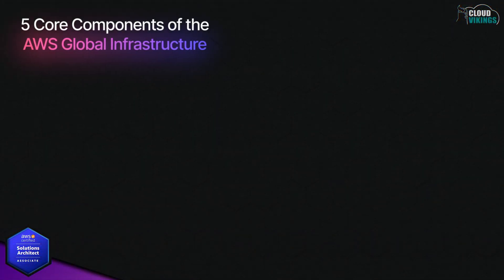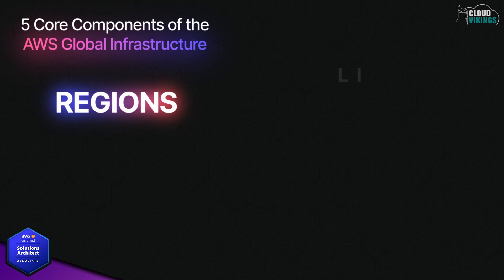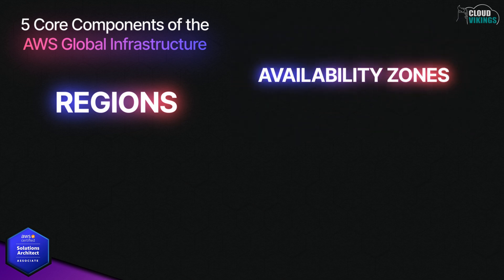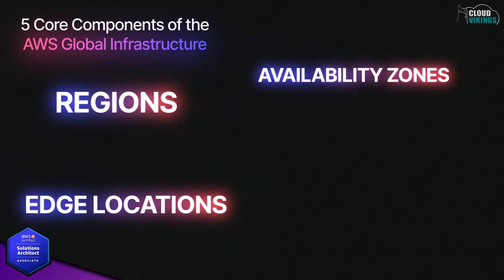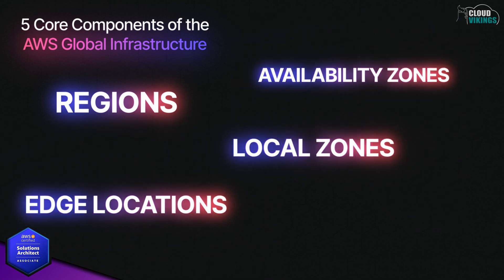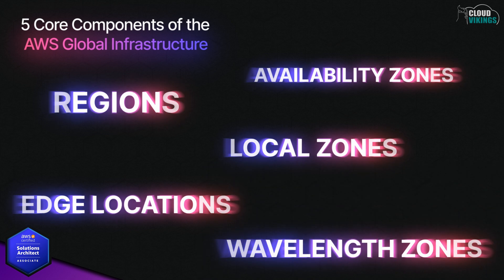AWS has five core components to its global infrastructure: regions, availability zones, edge locations, local zones, and wavelength zones. Don't worry about what all these mean quite yet — we'll dive into these in upcoming lessons.